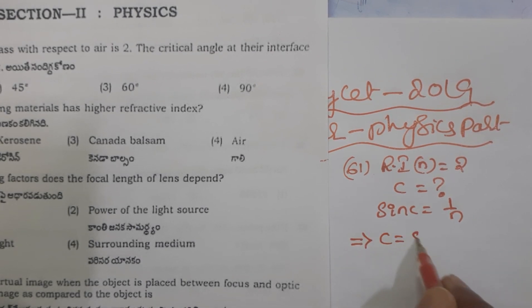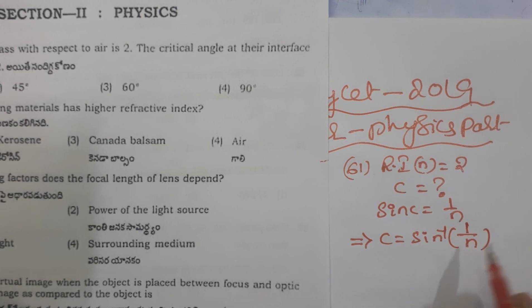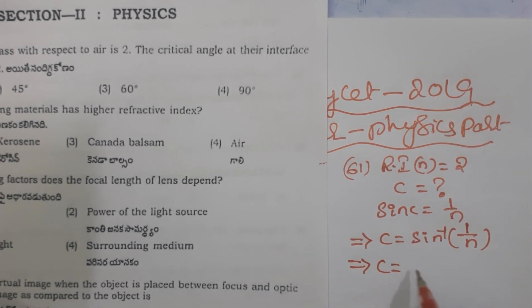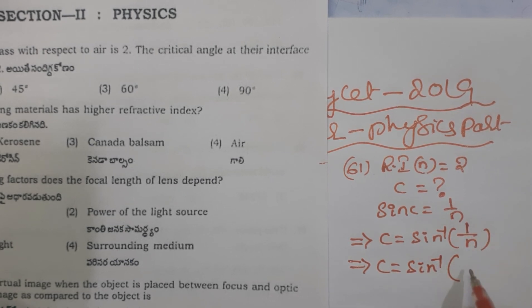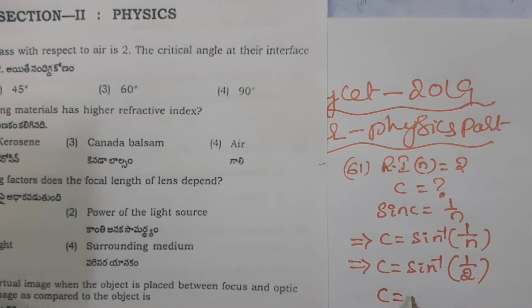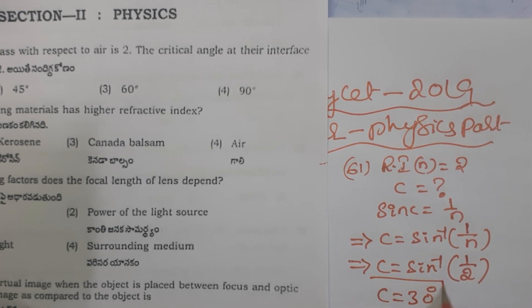So C equals sin inverse of 1 by n. Then C equals sin inverse of 1 by 2, where n value is the given refractive index 2. This equals 30 degrees. So the critical angle for this refractive index in the given medium is 30 degrees.